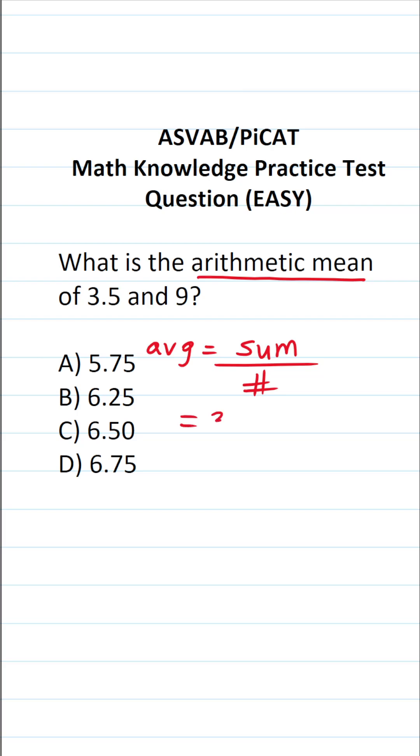So let's find the sum of 3.5 and 9. That's going to be 3.5 plus 9. How many things did we add together? We added two numbers together. So this is going to be divided by 2.